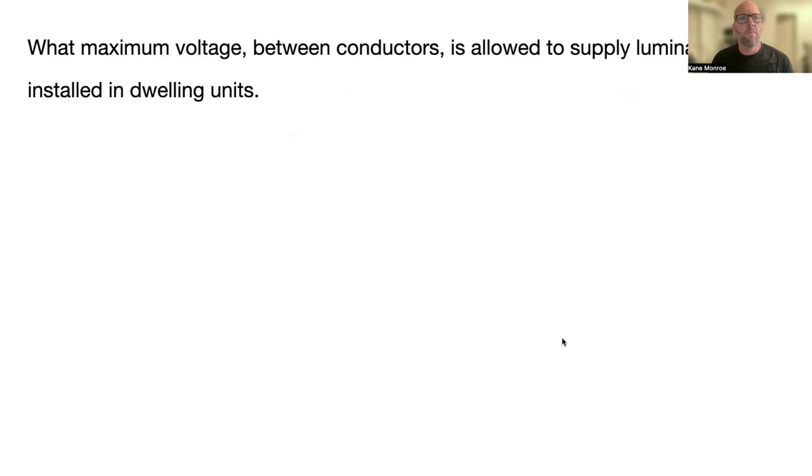What maximum voltage between conductors is allowed to supply luminaires installed in dwelling units? So inside houses or apartments, and that's 120 volts, 2106A.